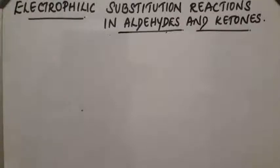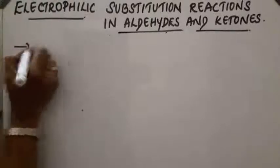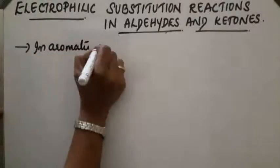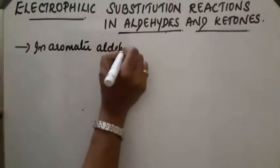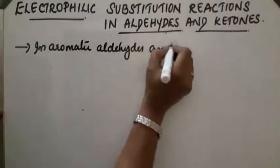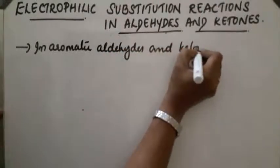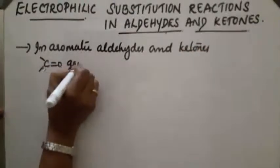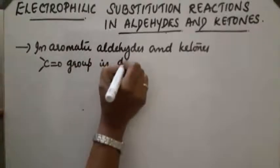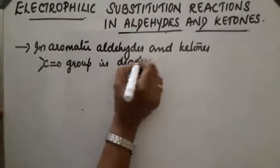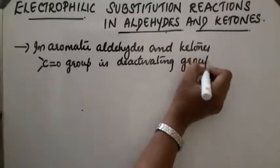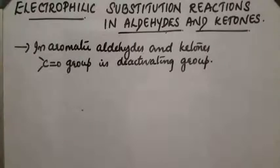Electrophilic substitution reactions in aldehydes and ketones. In aromatic aldehydes and ketones, the carbonyl group — the C double bond O group — is a deactivating group. So, electrophilic substitution reaction will take place at the ring.